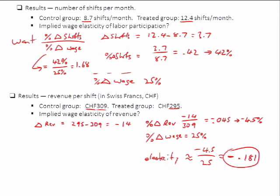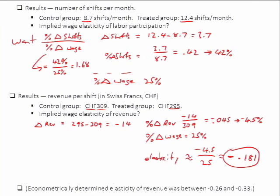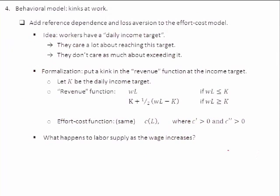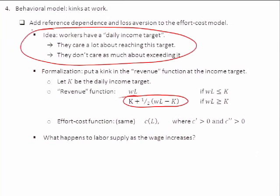So now let's get started on looking at the alternative behavioral model that can explain these results. The first thing is that there is a glaring error in the handout — cross out what you've got for the revenue function above the kink and put in what's on the slide. But basically the idea, going back to the concept of reference-dependent preferences, is that people have a reference point for how much money they want to make — determined as a kind of daily income target. It means that each driver or bicycle messenger has a certain amount of money they set out to make, and any money above that target just matters less to them.